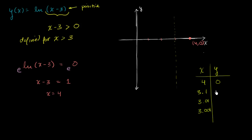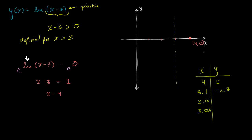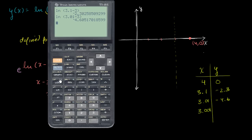So this right over here is negative 2.3. If we take the natural log of 3.01 minus 3, we get to negative 4.6. Once again, just rounding, negative 4.6.